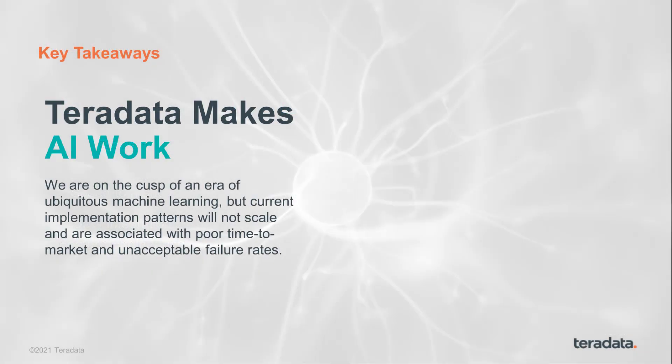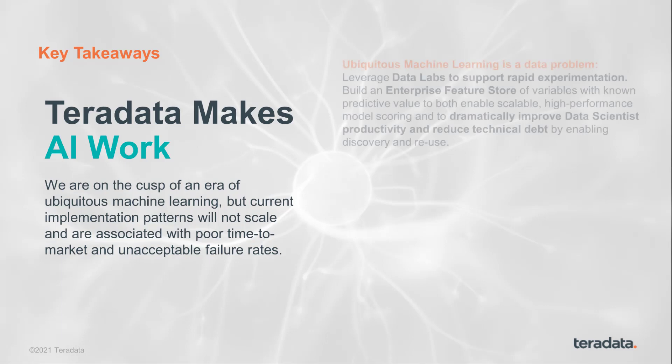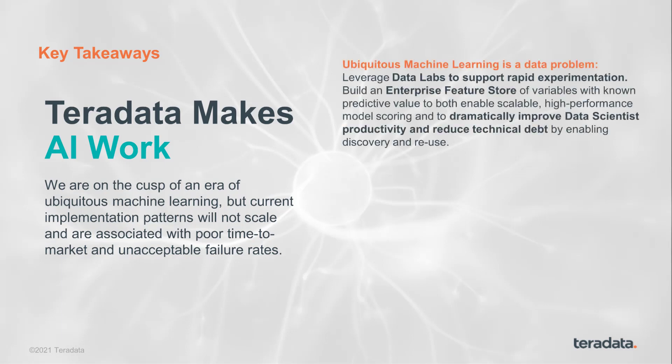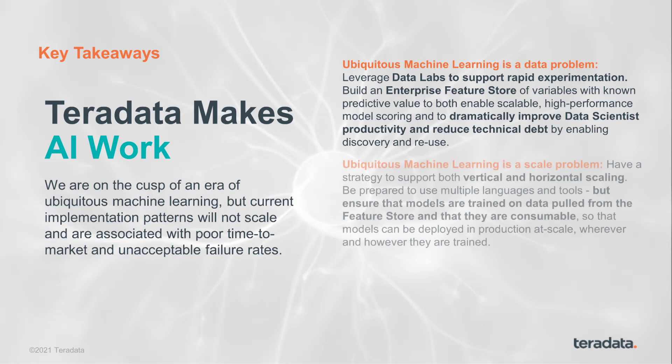Some key takeaways from this overview: with Teradata, you can make AI work and make AI work at scale. To enter this era of ubiquitous machine learning, there's a data problem — you need data at scale, fast, and you need to address that 80% of time spent on data preparation. One answer to that is an enterprise feature store. Ubiquitous machine learning is also a scale problem: how can you have hundreds of thousands or millions of models in production and still keep a team under control? How can you release data scientists from production duties so they can return to data discovery and model training?